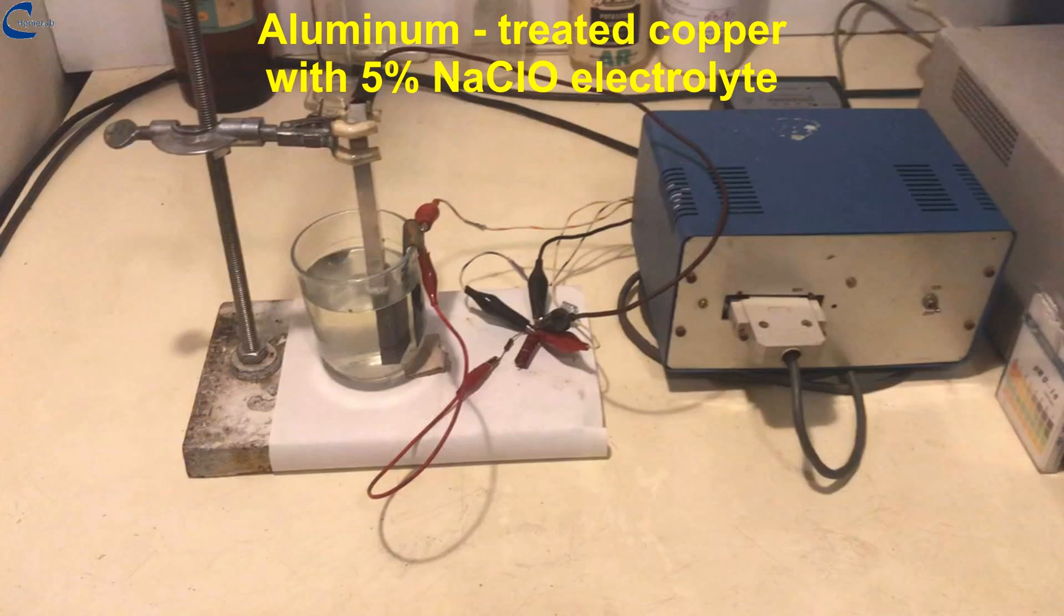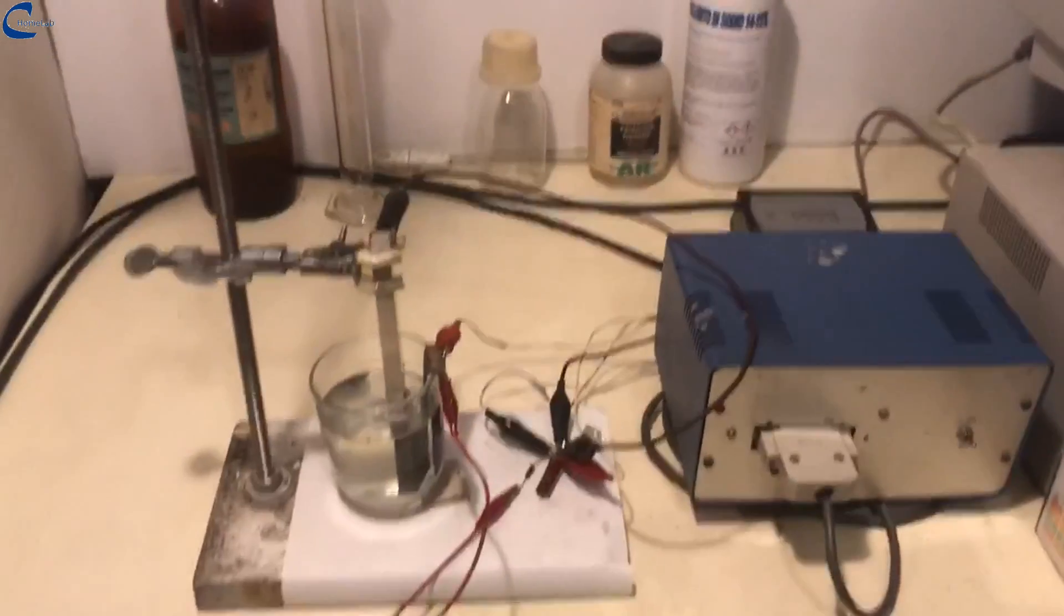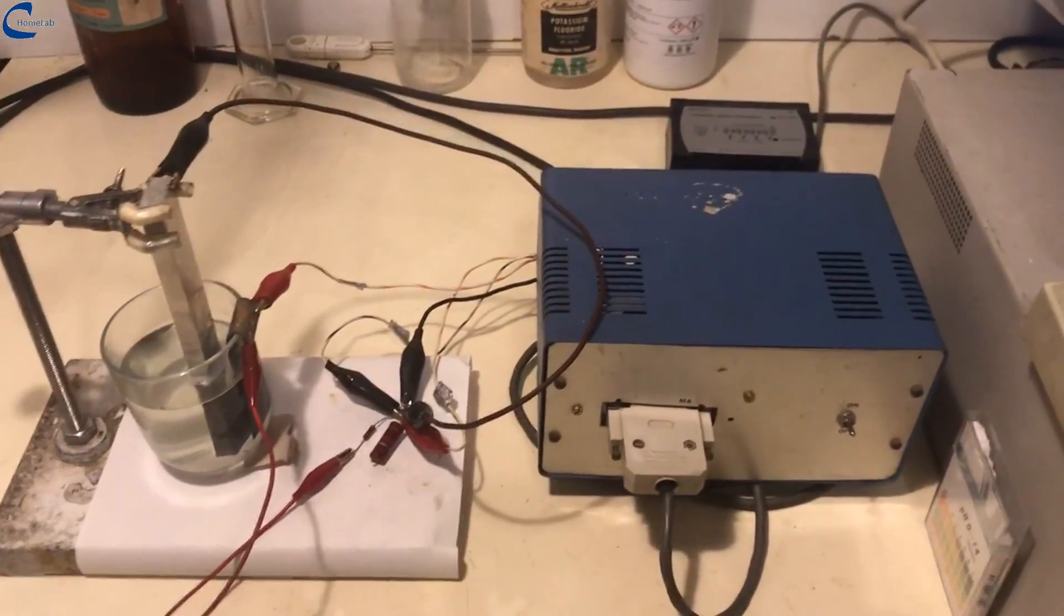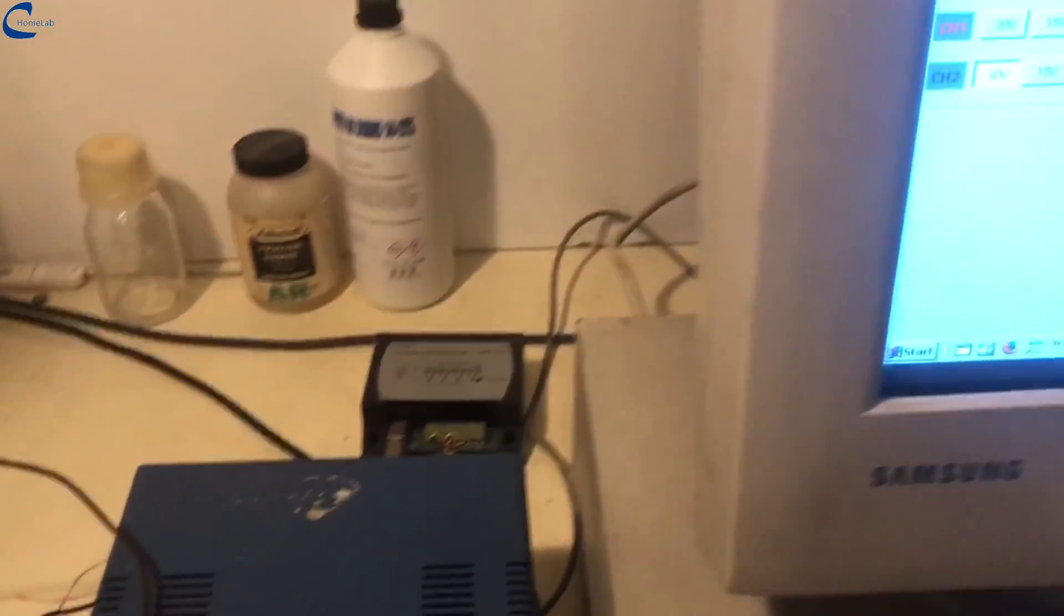Now I will test the performance of the cell with aluminum electrodes and treated copper, the one that gave the best results. The copper electrode is now coated with a thin layer of oxide, black copper.